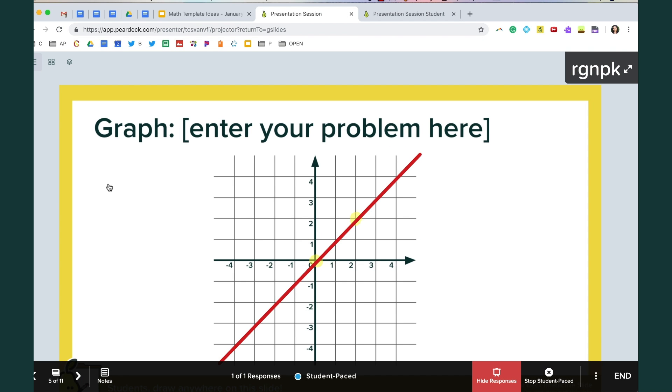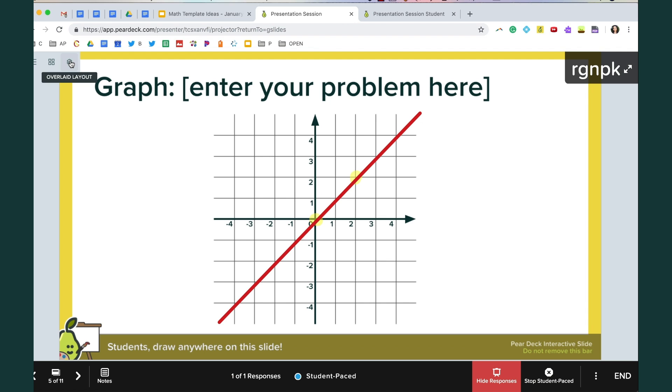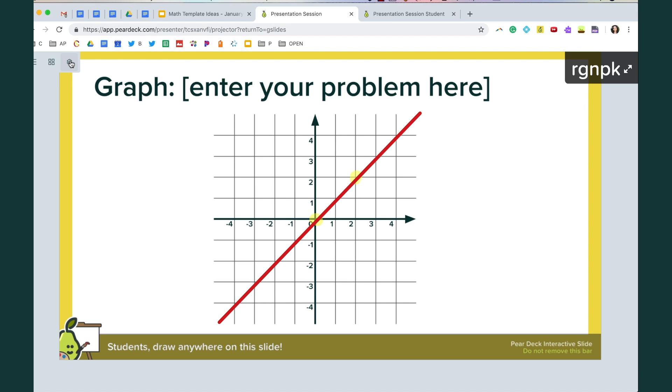Students would be able to draw maybe they would plot some points and they could use the line tool. And then from the teacher end what's really powerful is that you can use this overlaid layout. Right now I don't have multiple students logged in but that would actually plop all the graphs one on top of one another and so that would be a really easy quick way to see if everyone in the class is arriving at the same answer or if they are not.